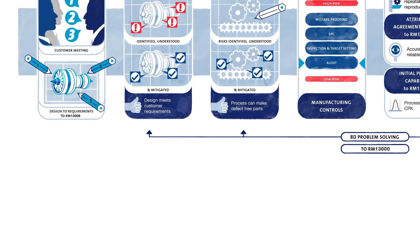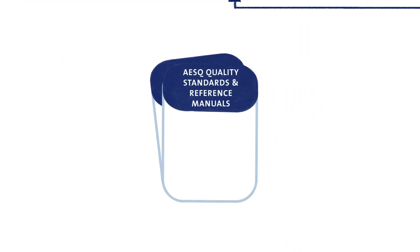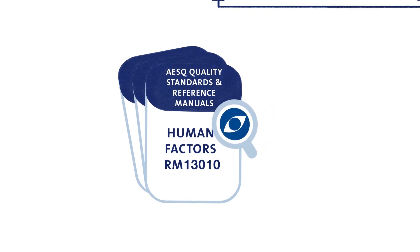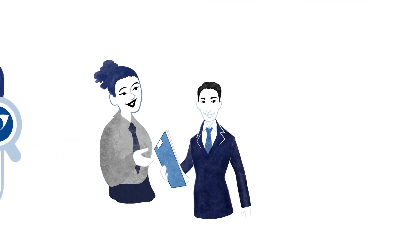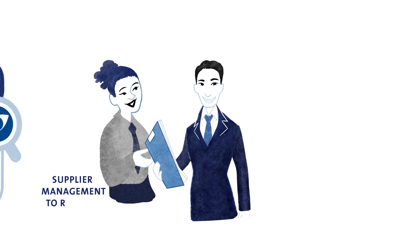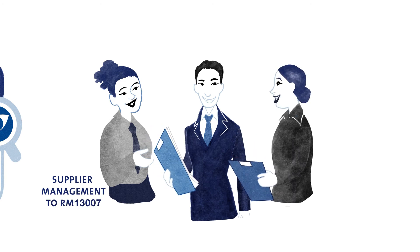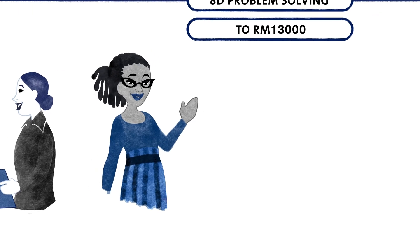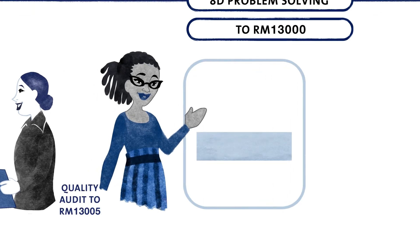The Aero Engine Supplier Quality Group standards have been created to provide clear requirements on how these defect prevention tools are to be effectively deployed. There is a clear expectation that each of us will deploy these requirements and cascade them down through our supply chain.